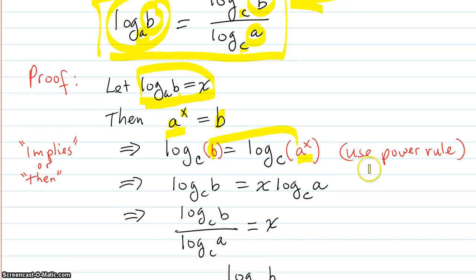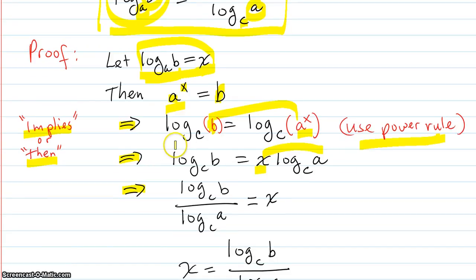Now I'm going to use the power rule. I'm going to write the statement down. These arrow things mean implies or then, so you have each of them leading to the next step. I'm going to use the power rule, bring the x down in the front. See here it is down in the front. It was on the a, now it's down in the front.